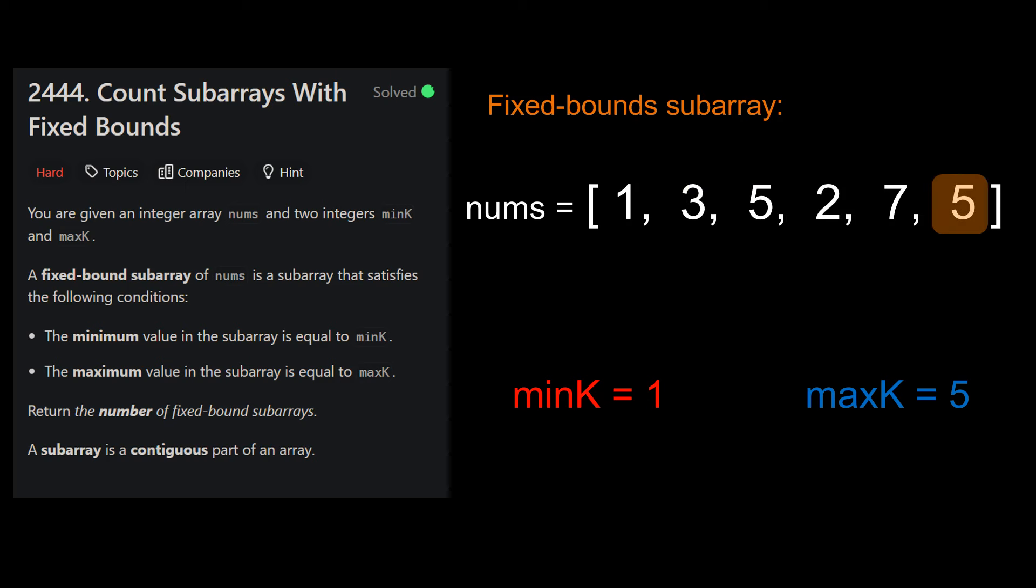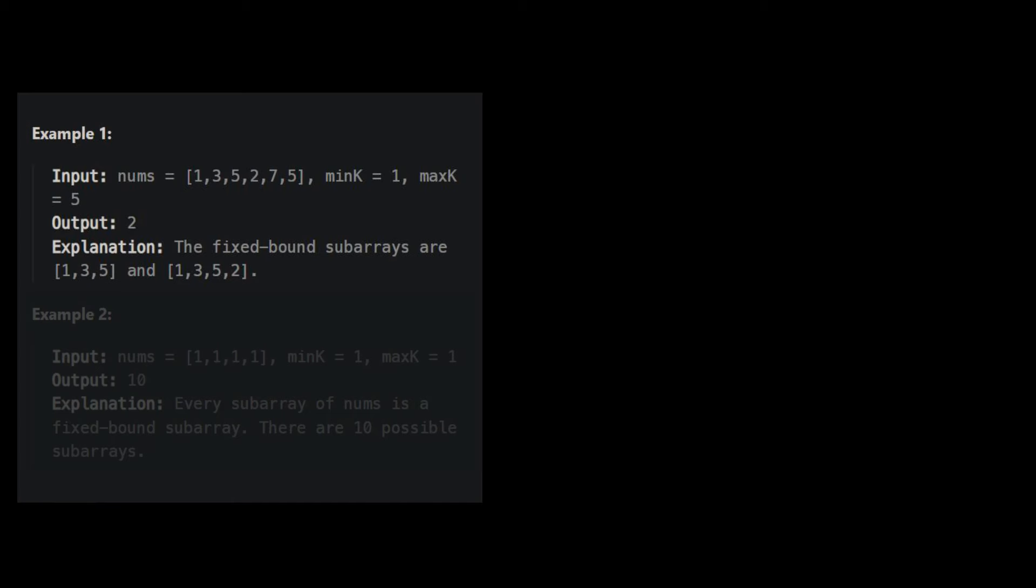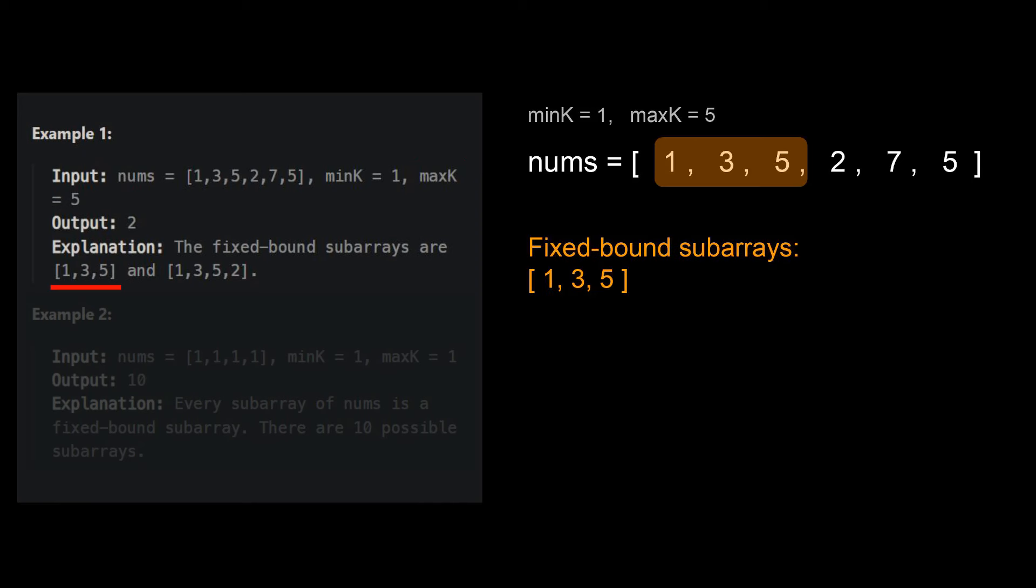Our job is to count the number of subarrays that fit this criteria. Let's start by looking at some examples. In example 1, nums is 1, 3, 5, 2, 7, 5, min k is 1, and max k is 5. There are two fixed bound subarrays in this example: 1, 3, and 5. Its minimum is 1, which matches min k, and its maximum is 5, which matches max k.